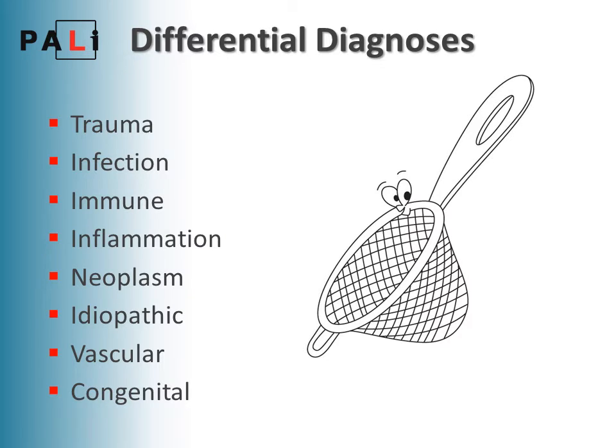For differential diagnoses, we can use a surgical sieve to work out what they might be: trauma, infection, immune causes, inflammatory causes, neoplastic, idiopathic, vascular, and congenital causes. We'll go through one example of each through the next few slides.